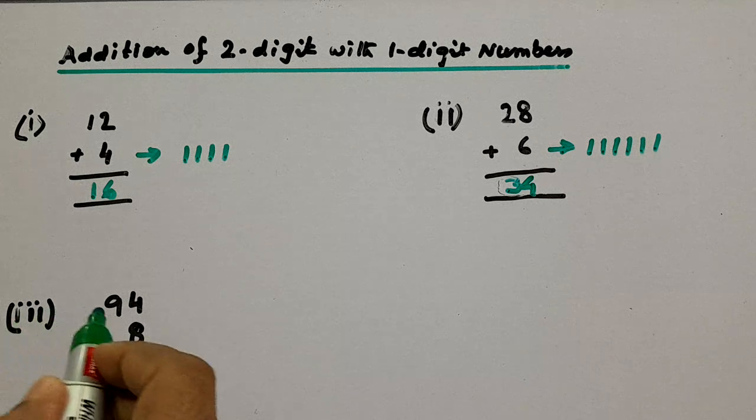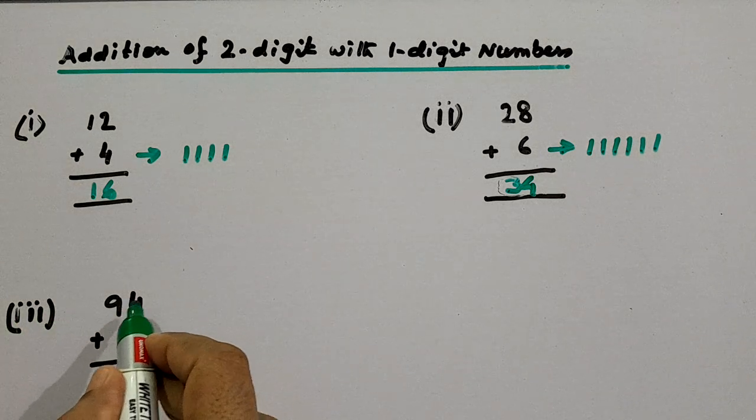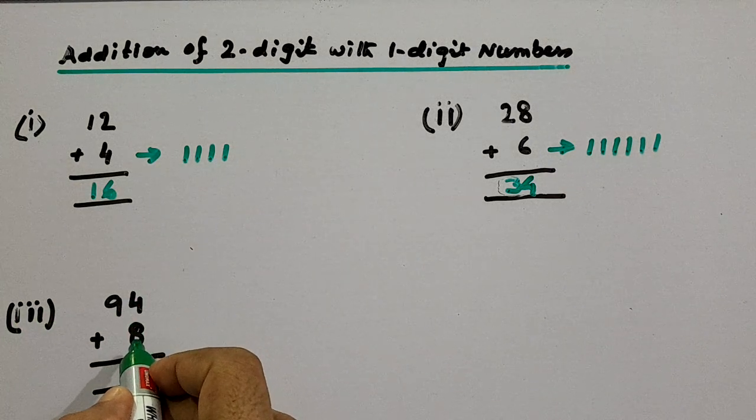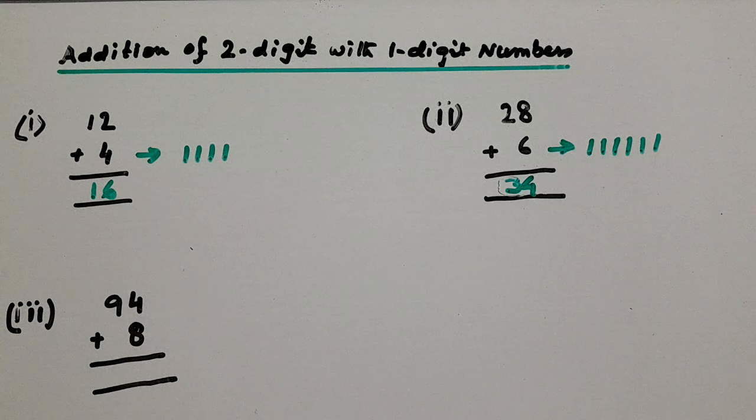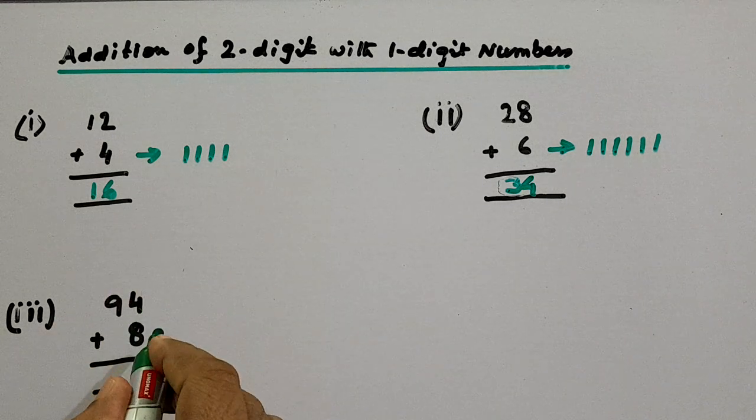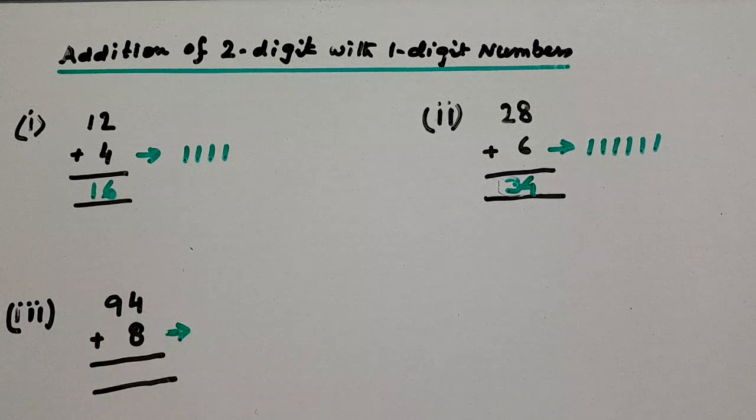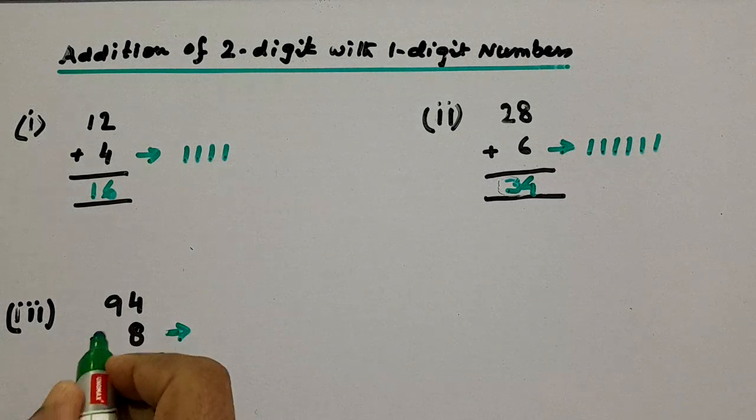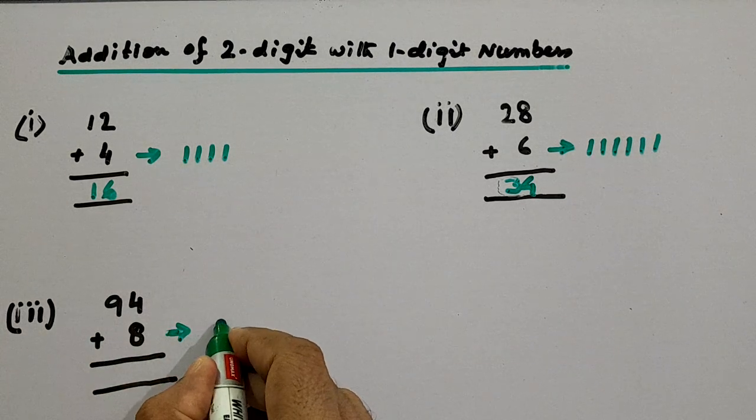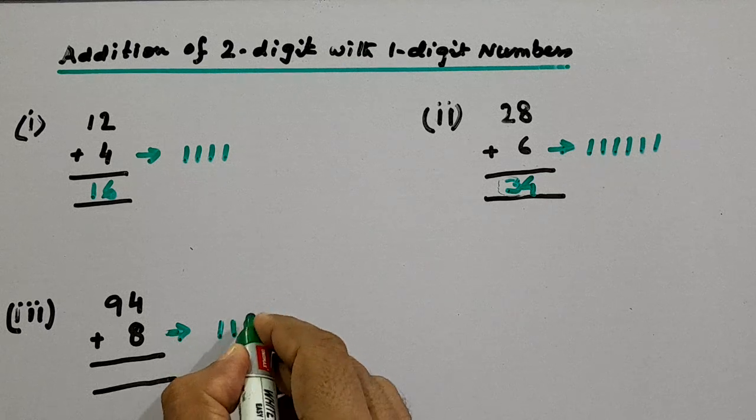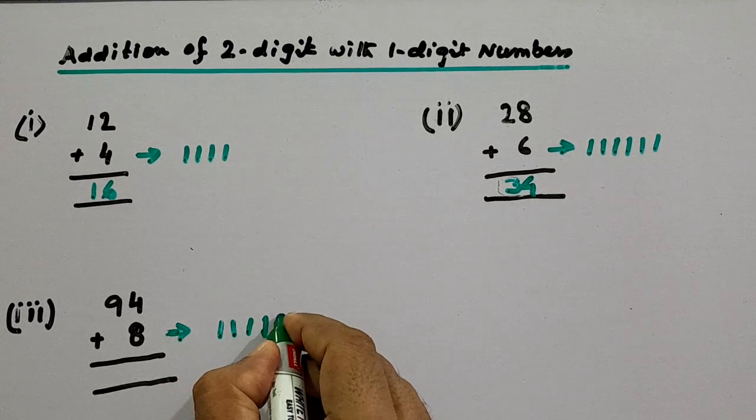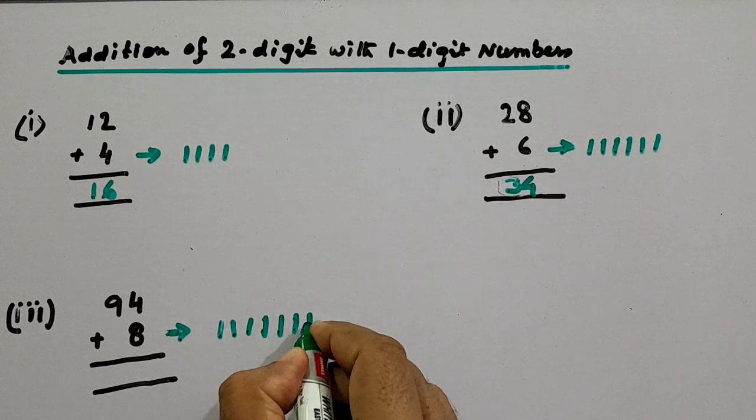Now the next problem: 94 plus 8. Against the single-digit number, we will draw the same number of lines, which means 8 lines: 1, 2, 3, 4, 5, 6, 7, 8.